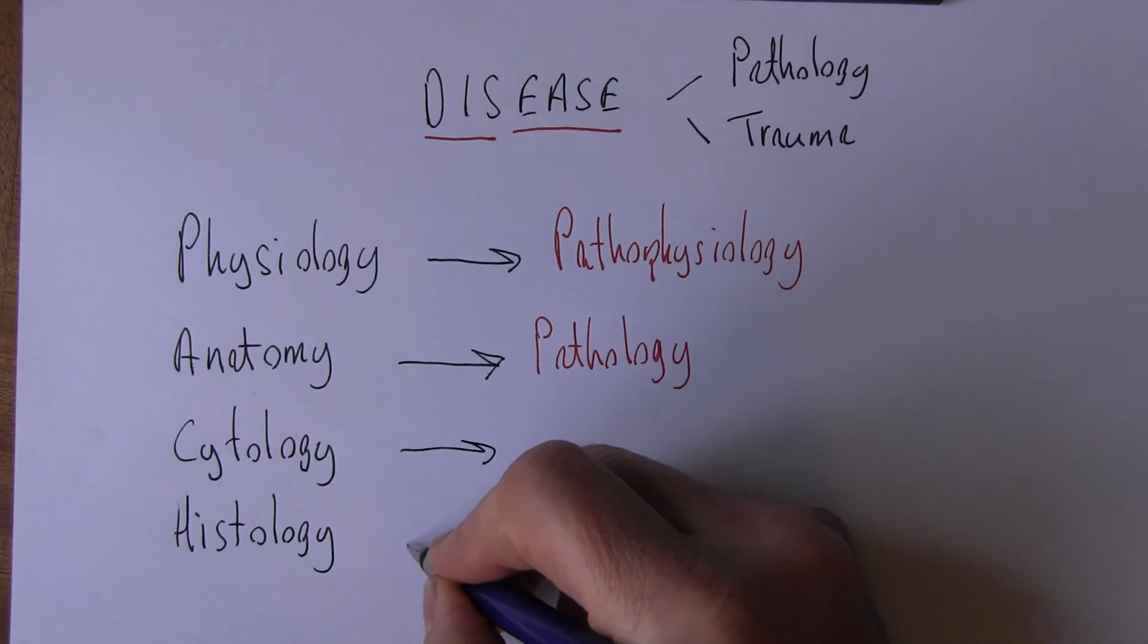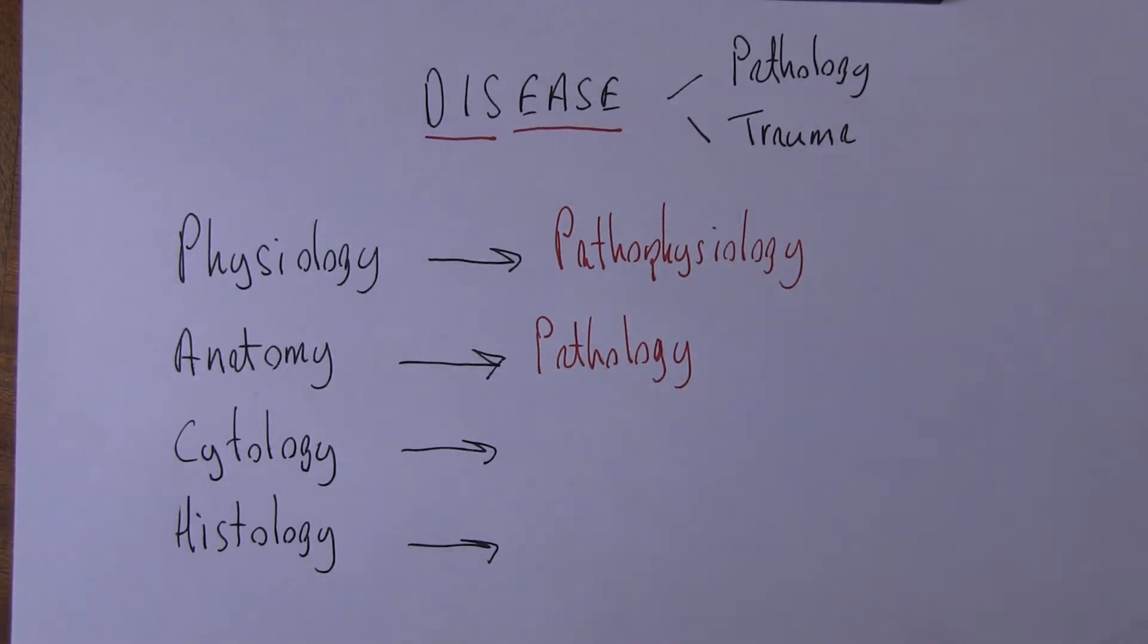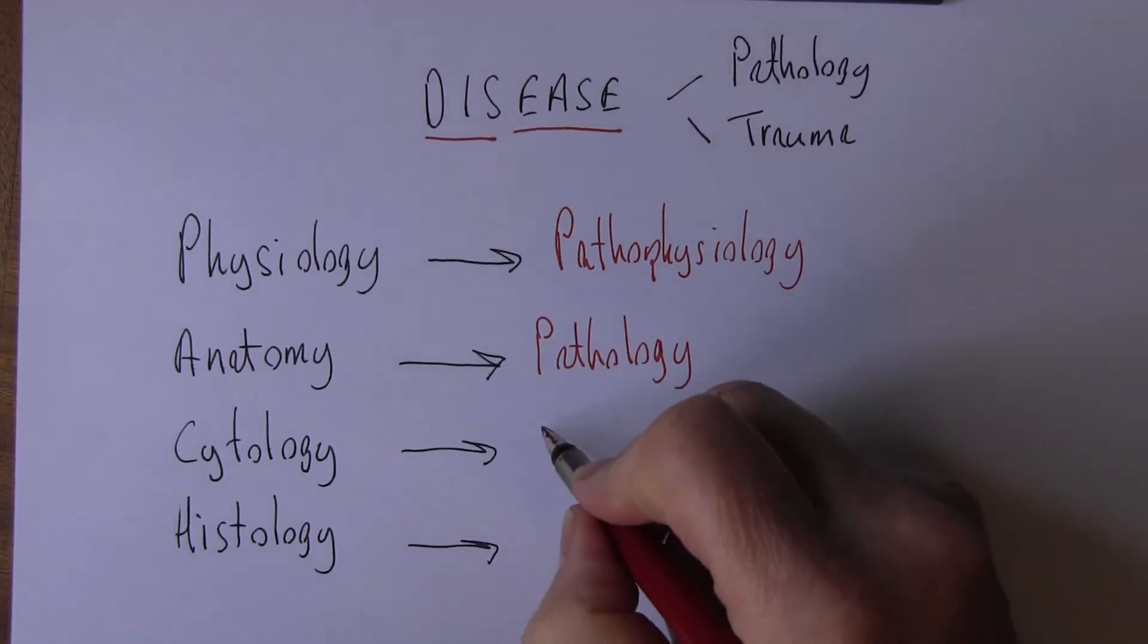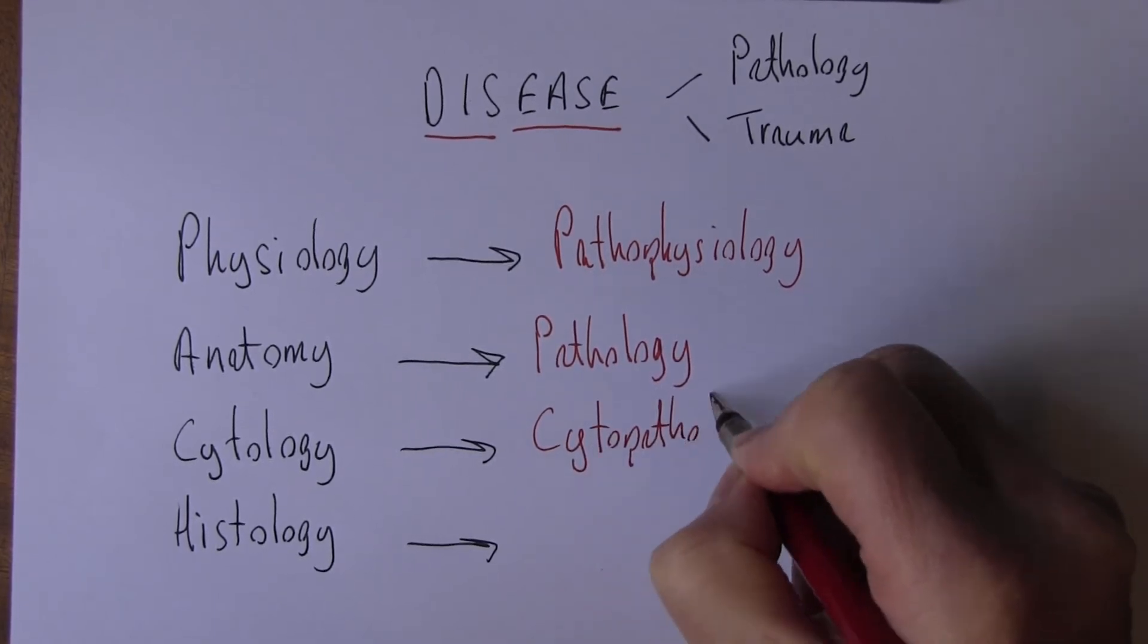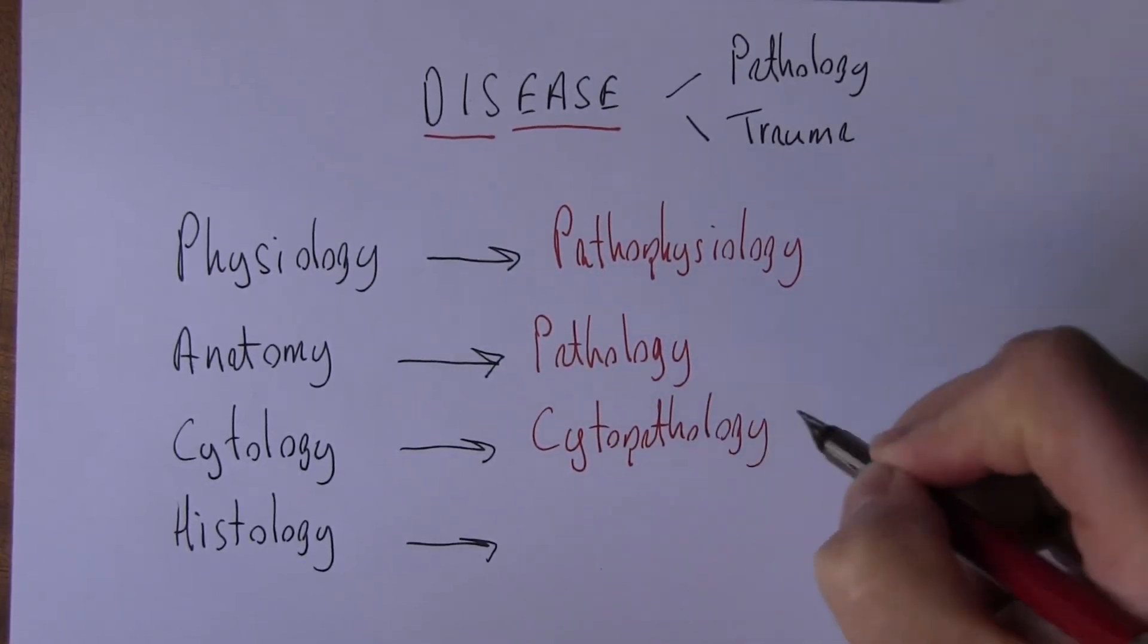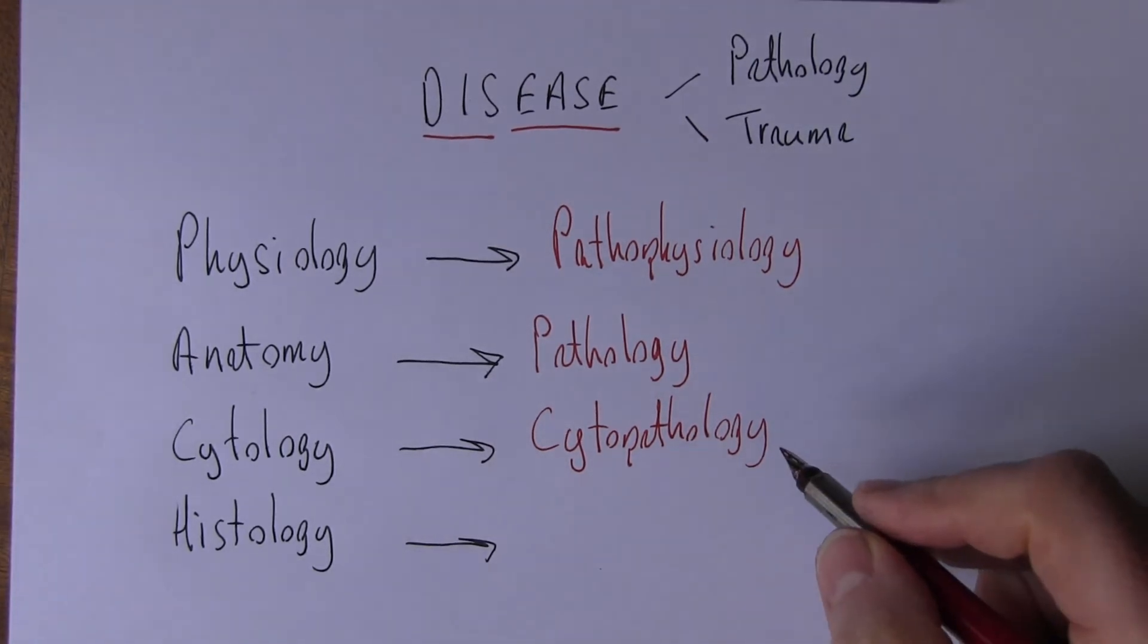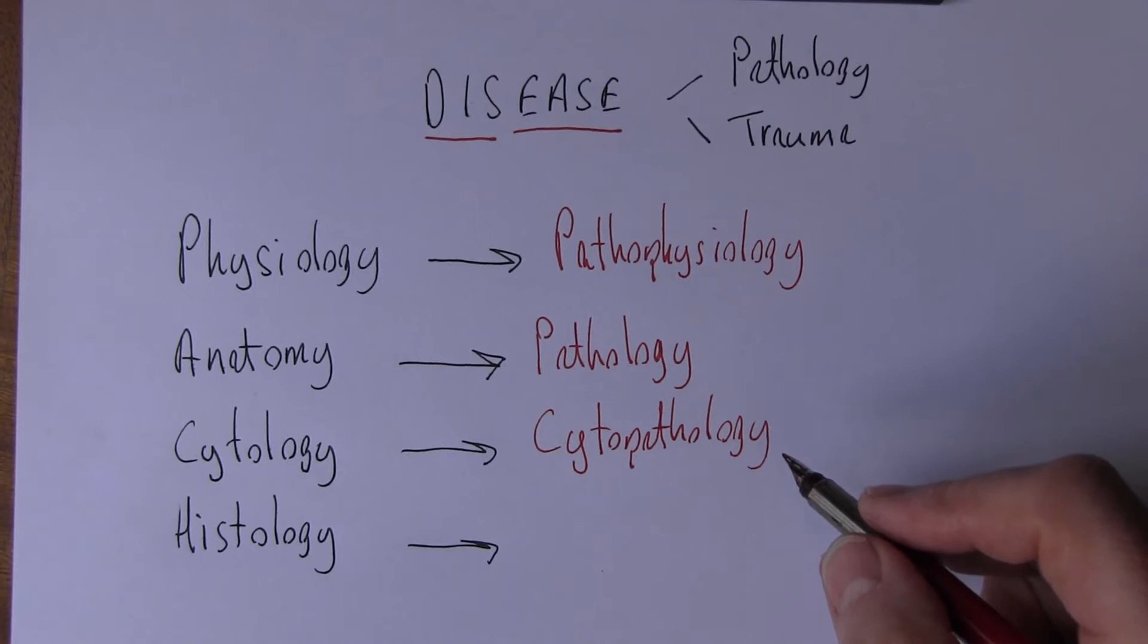Cytology and histology, if we're talking about the abnormal, would be cytopathology - looking at cells in the microscope to look for abnormalities such as pre-malignant changes or malignant changes for example.